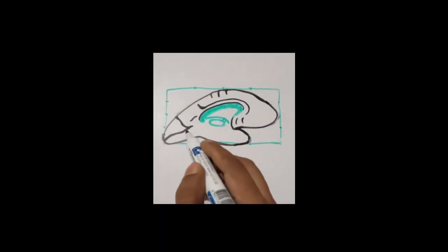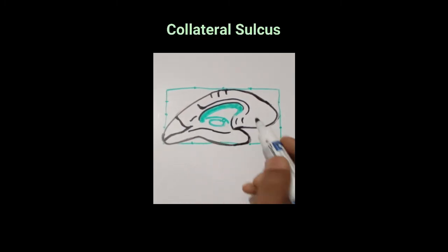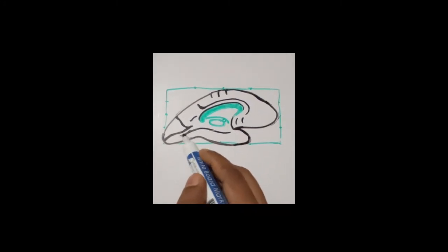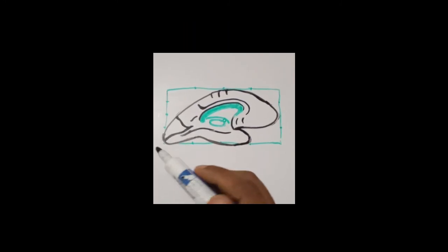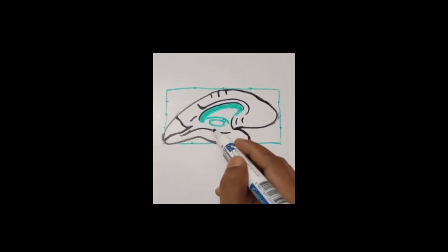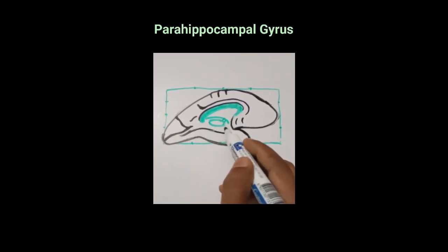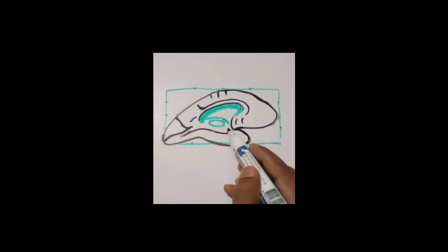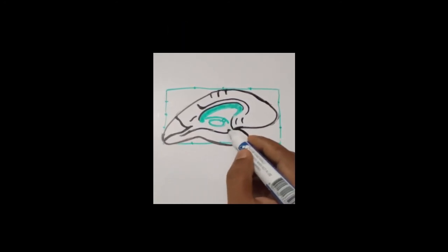Here there will be another sulcus termed as the collateral sulcus, and the area in between the calcarine sulcus and the collateral sulcus is the lingual gyrus. Just above the collateral sulcus, this area is the parahippocampal gyrus. Just in front of the parahippocampal gyrus, this area will be termed as the uncus.